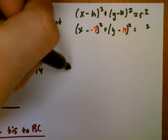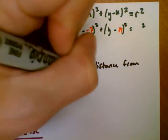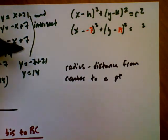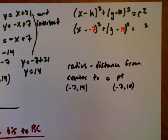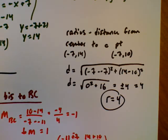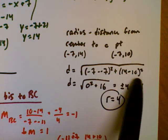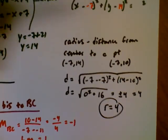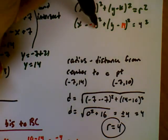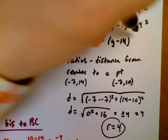I can find the radius using the distance formula — the distance from the center negative 7, 14 to one of the three points. I'll choose negative 7, 10. Using the distance formula with x1 minus x2 squared plus y1 minus y2 squared, I end up with a radius of 4, which makes sense from the picture. Substituting everything in, the final equation is x plus 7 squared plus y minus 14 squared equals 16.